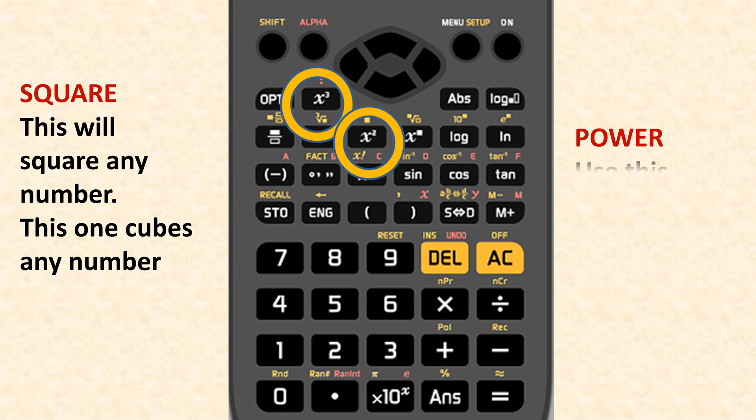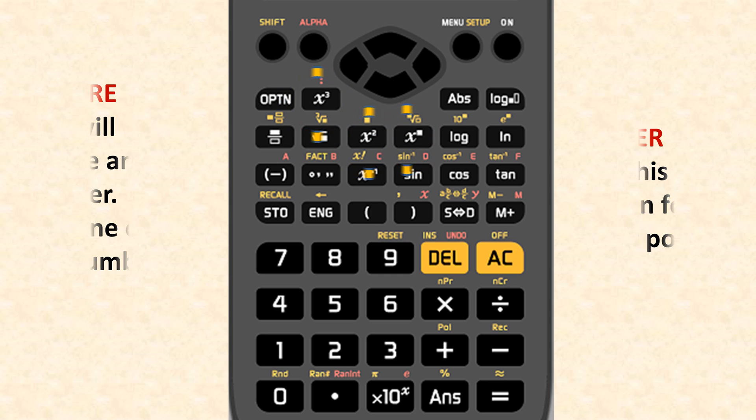Then we have power, and you enter the number you require. And then this button you would use to input a negative number.